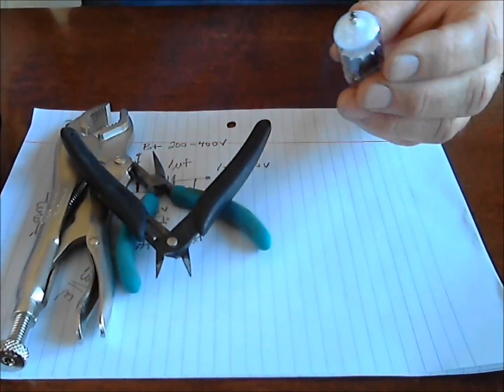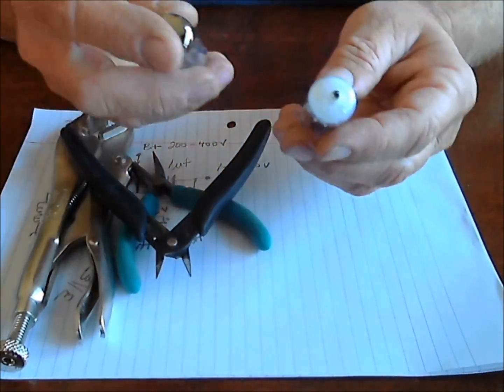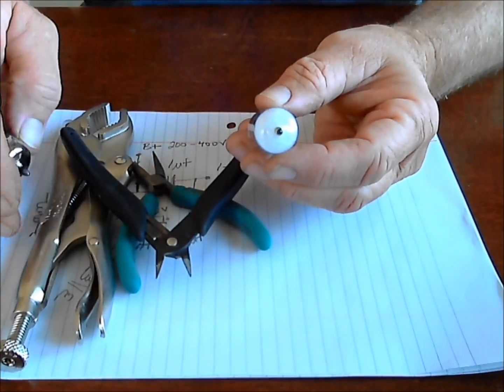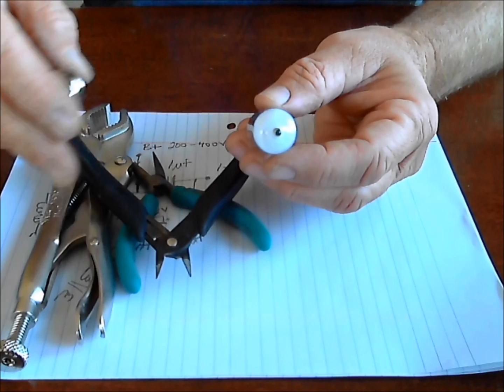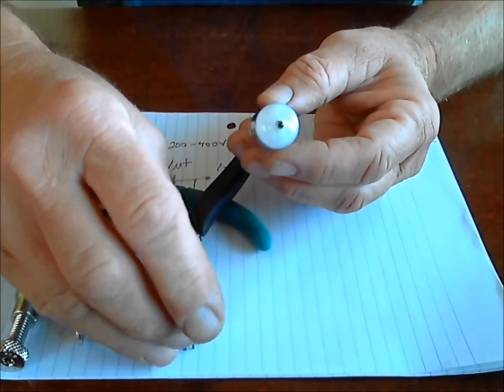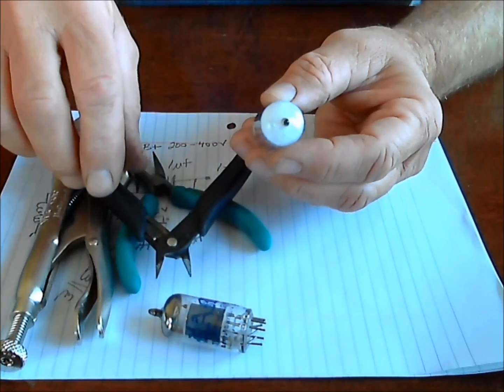Hi, this is Roger. I'm going to show you today how a 12AX7 is constructed, and then on this piece of paper, I'm going to show you how the elements of the tube fit into the schematic that we talked about before of the single-stage amplifier.